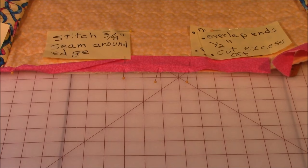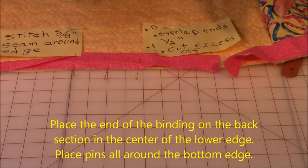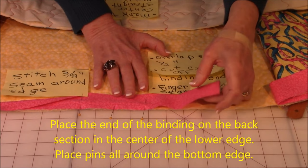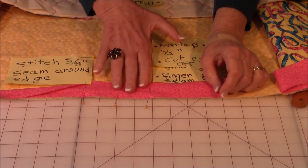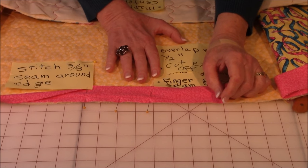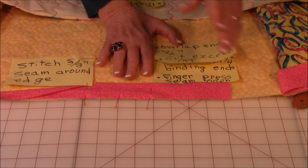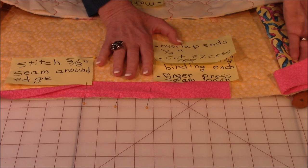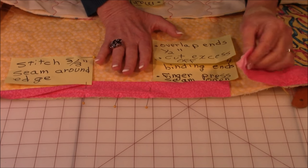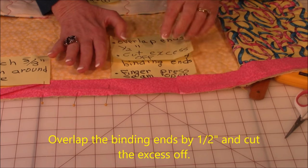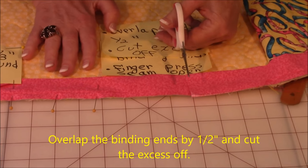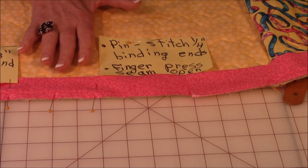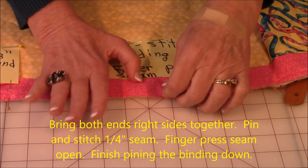All right. Then begin pinning it down. And start somewhere in the center on the back. And begin pinning it down all the way around the two, all four sides. When you get to where the two ends meet, you're going to overlap by a half an inch. And then you're going to cut the excess off.